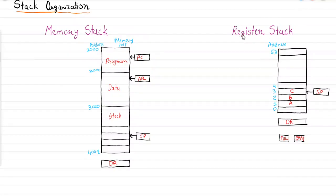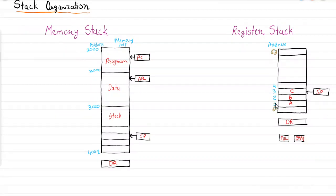In the register stack, the size of the stack is fixed. For example, here we have taken a register stack of size 64, where the first address is 0 and the last address is 63. It grows upward: 0, then 1, 2, 3, 4, and so on up to 63. So register stack size will be fixed.